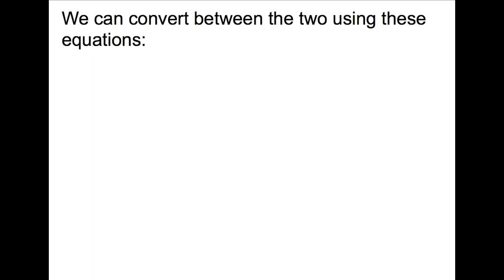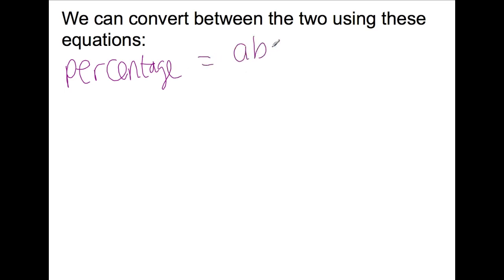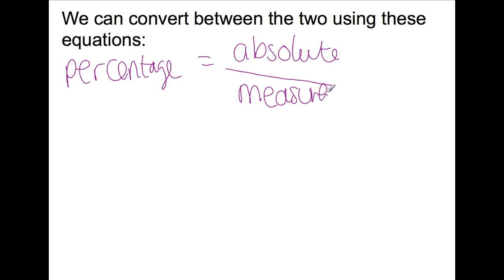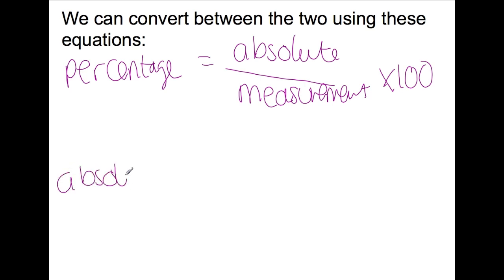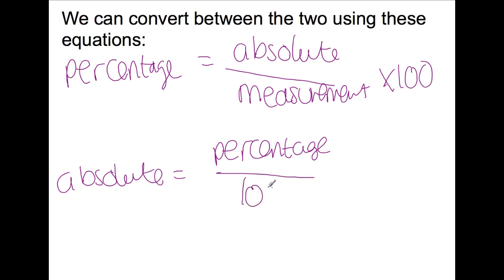We can convert between these two uncertainties using these equations. To calculate a percentage uncertainty, you take the absolute uncertainty, divide by the measurement that you have taken, and then multiply by 100. To calculate the absolute uncertainty from a percentage, you take the percentage, divide it by 100, and then multiply by the measurement.